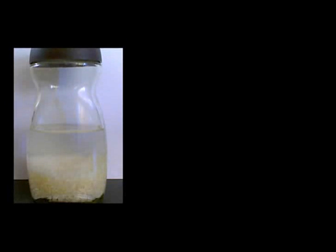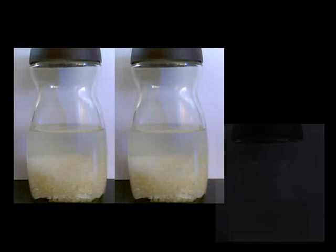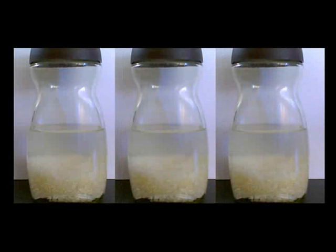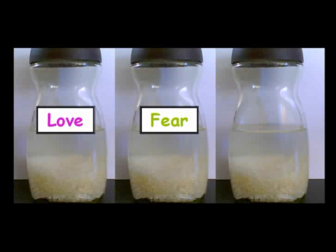Next, we are going to label the jars. One jar 'love,' one jar 'fear,' and we leave the third jar as a control and unlabeled. Next, we find a place where we can leave the jars for a month. Place them about half a meter apart and in a place that you can see them easily.